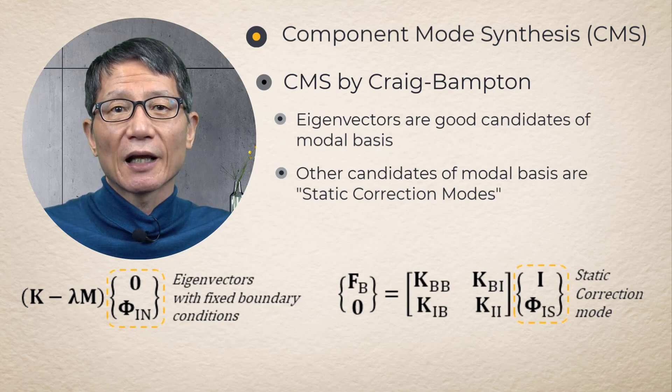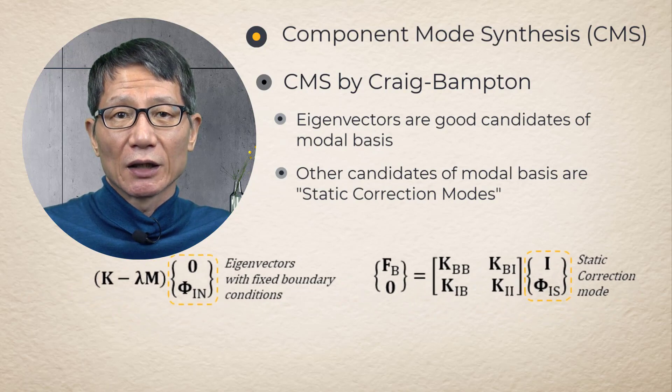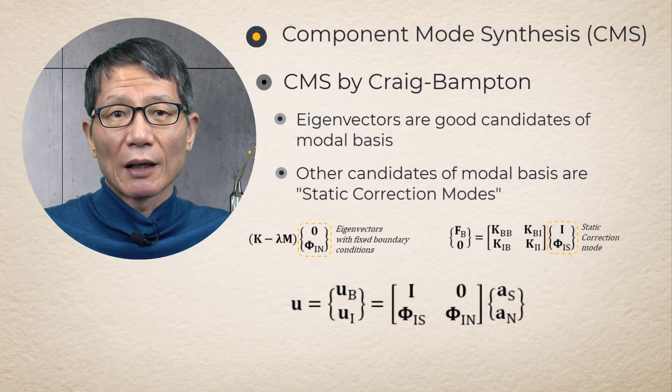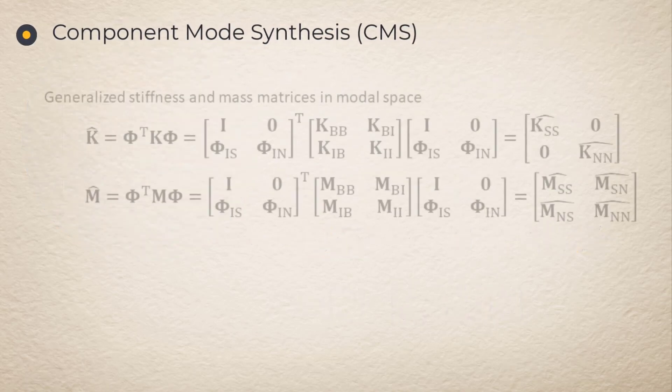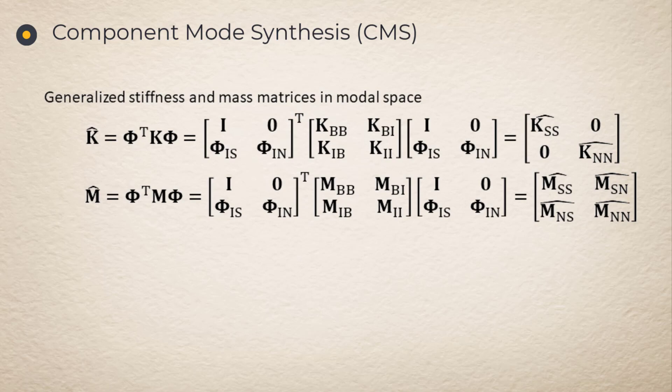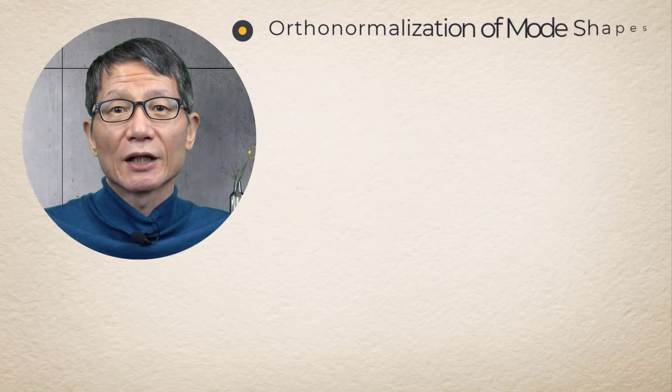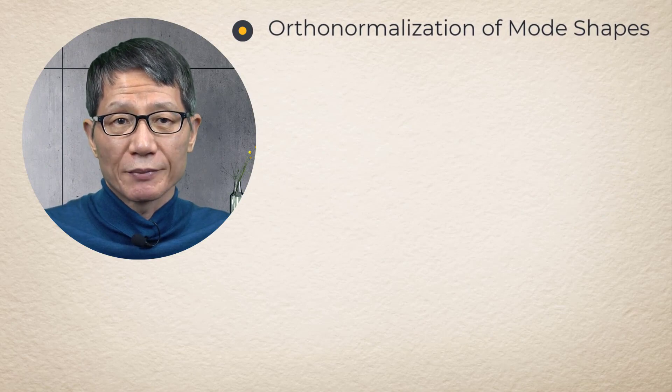These candidate modes are not orthogonal. In order to obtain orthogonal modes, generalized mass and stiffness matrices are calculated by projecting these matrices into the mode shape as follows. Also, normalization of mode shapes.